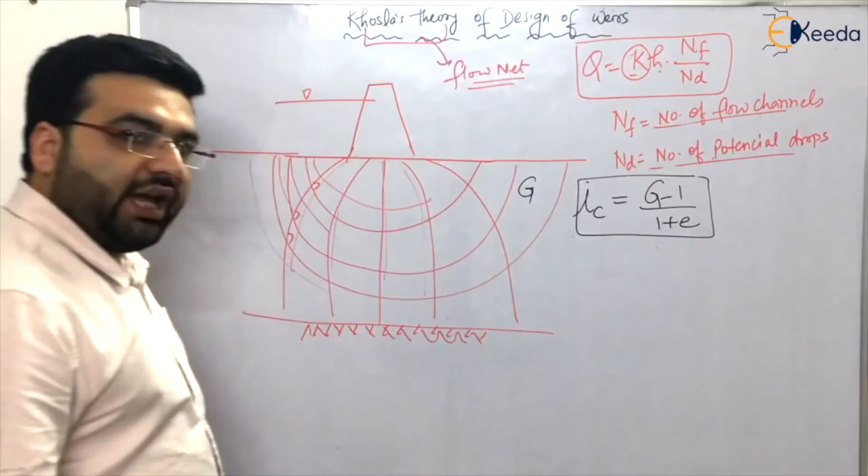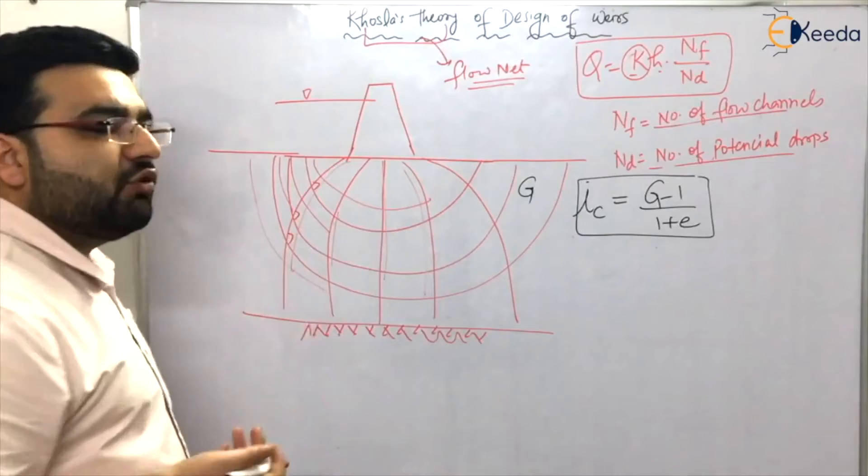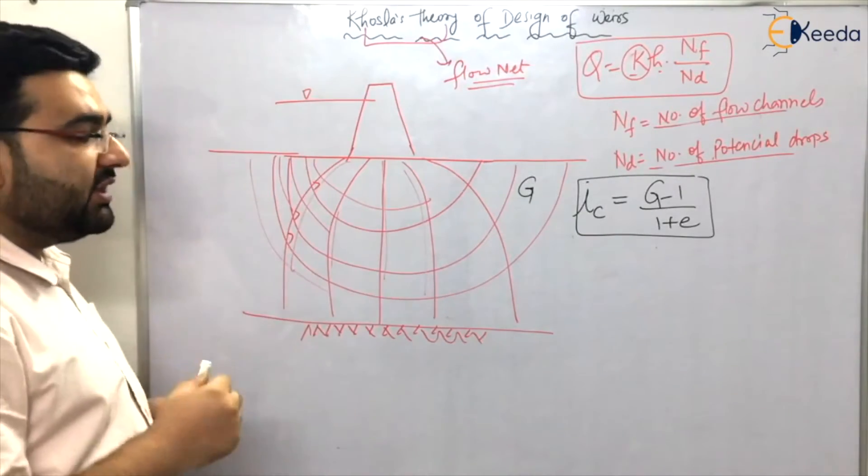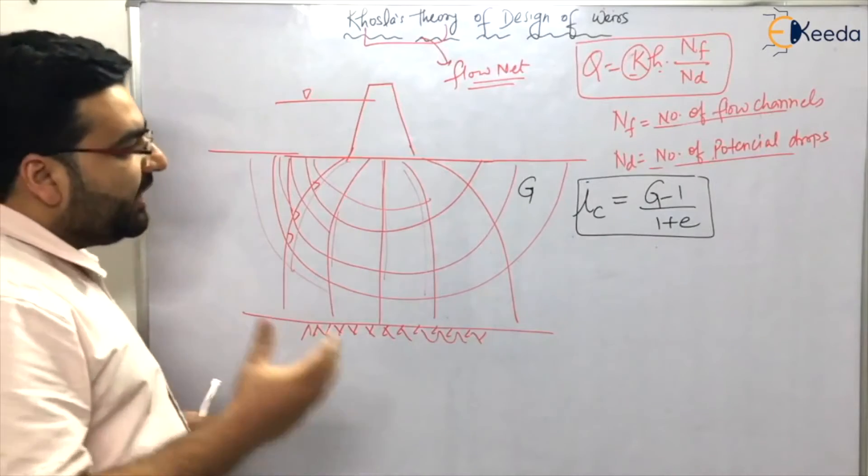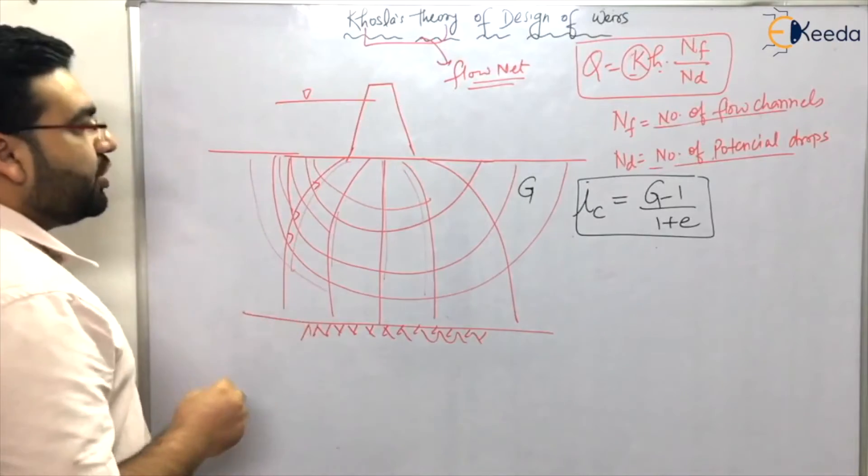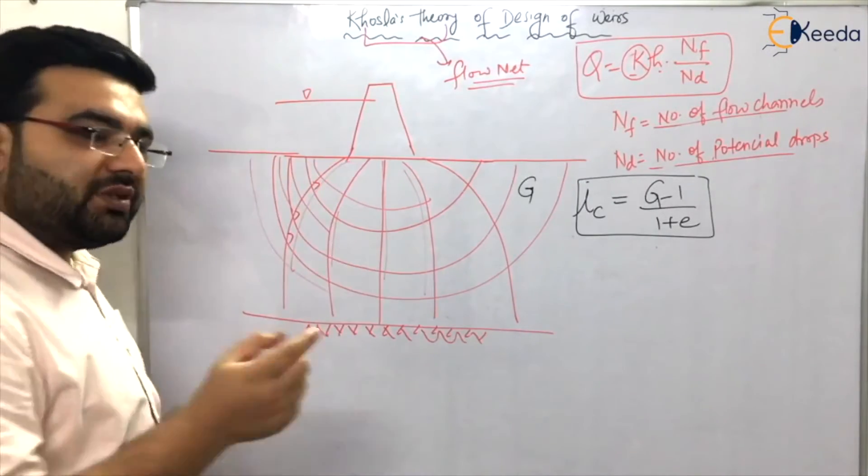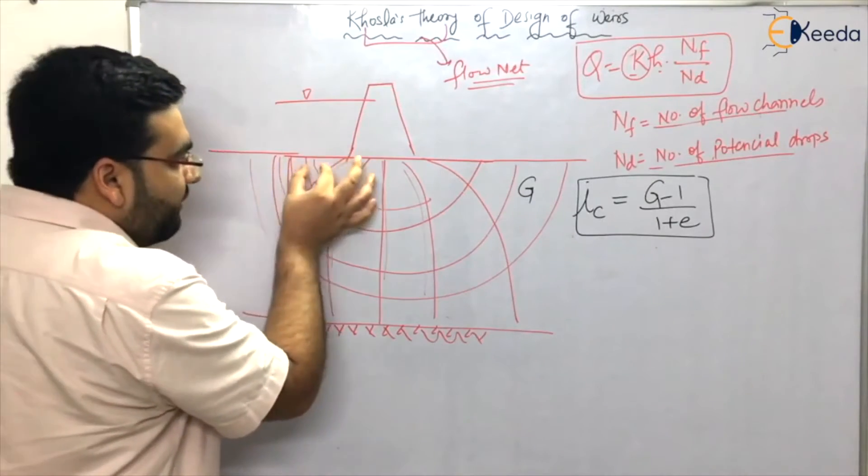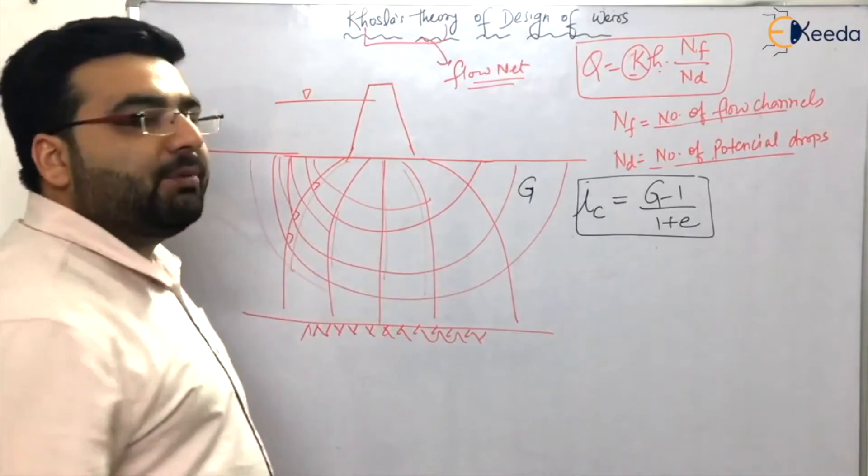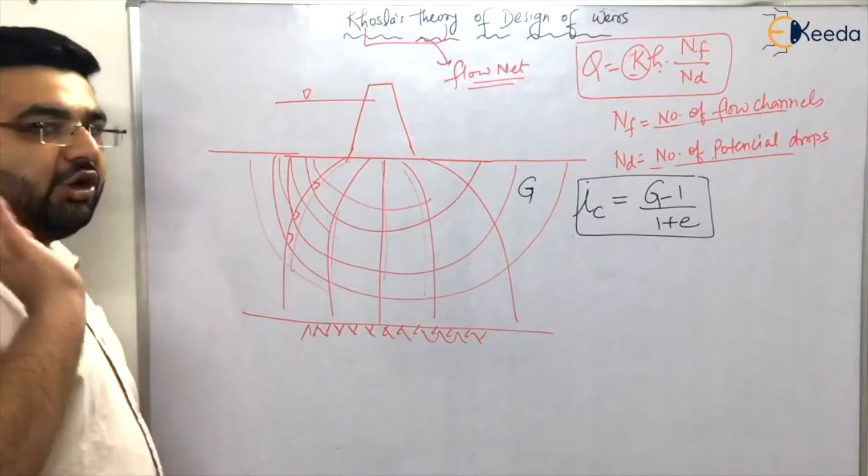Khosla said - first, how do we do this flow net? The flow net can be drawn easily in theory, but as far as site view and practical things are concerned, with the help of Pitot tubes we measure the velocity at each point, and all the data is fed into the computer. In the computer you automatically get a particular flow rate.